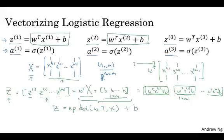Now, there is a subtlety in Python, which is that here, b is a real number, or if you want to say, you know, one by one matrix, it's just a normal real number. But when you add this vector to this real number, Python automatically takes this real number b and expands it out to this one by m row vector. So, in case this operation seems a little bit mysterious, this is called broadcasting in Python. And you don't have to worry about it for now, we'll talk about it some more in the next video.